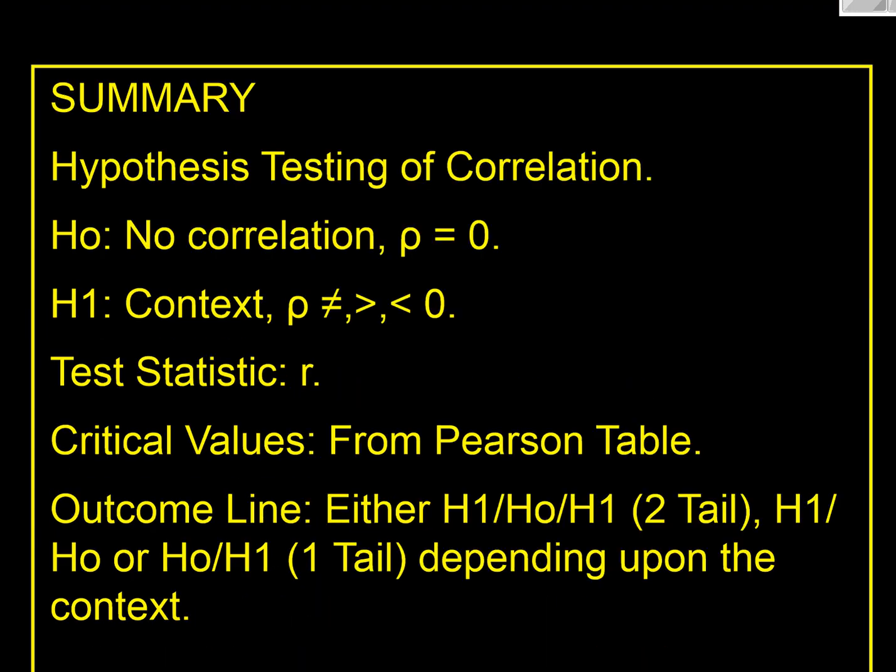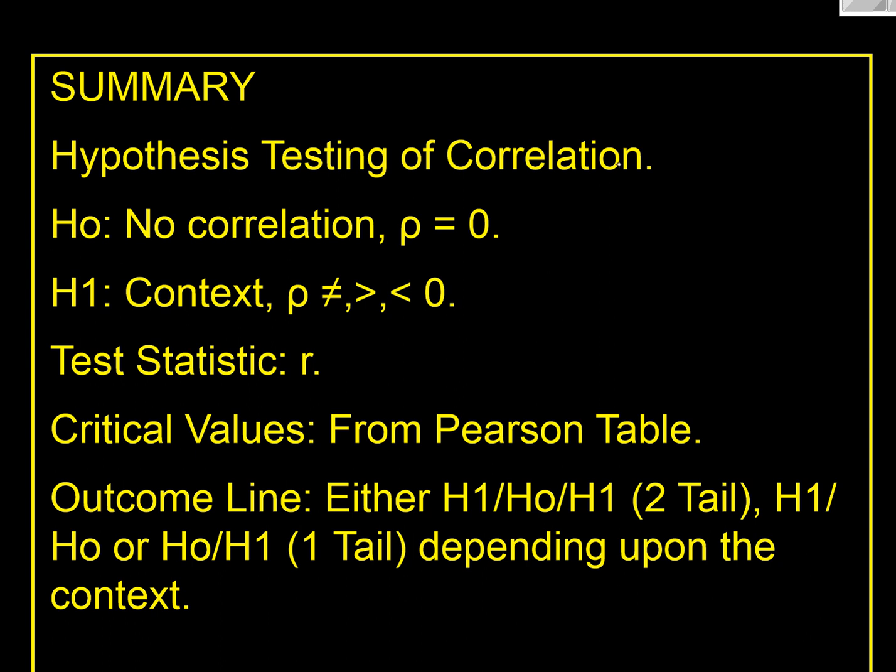Quick summary at the bottom here. Hypothesis testing of correlation. Our H0 is always that there's no correlation. So rho is 0 and we're looking for an r near 0. H1 is the context. Could be not equal to 0, greater than or less than. Our test statistic r is the correlation coefficient and the critical values are from the Pearson table. And on our outcome line, we're either going to have a H1/H0/H1 for a two-tail test or a H1/H0 or a H0/H1 for one-tail test, depending on the context. I hope that's of use.